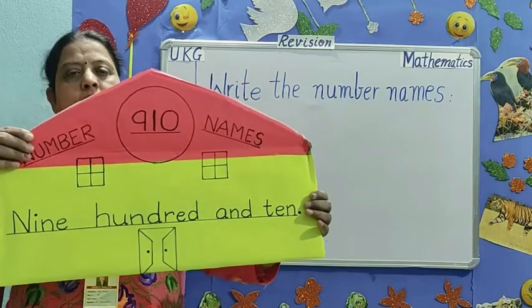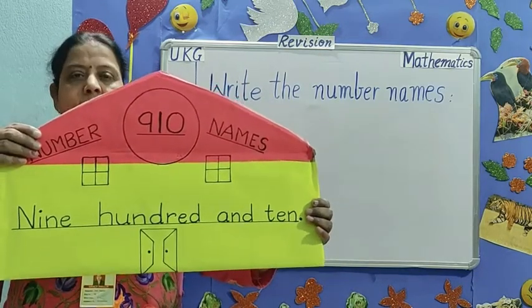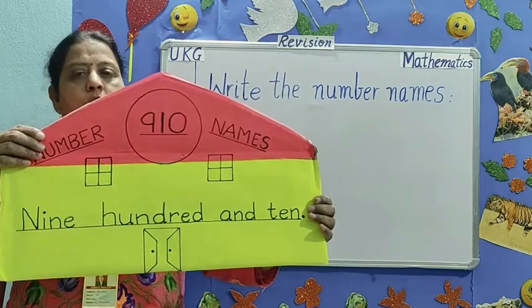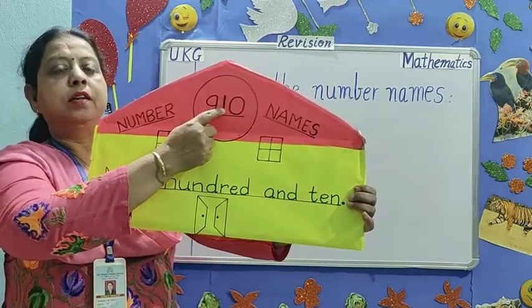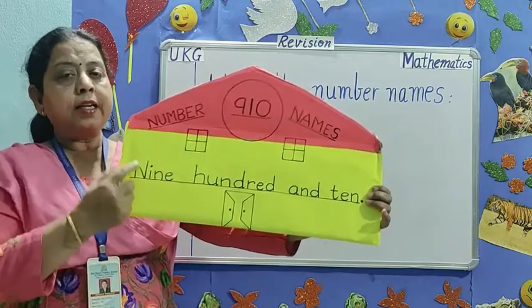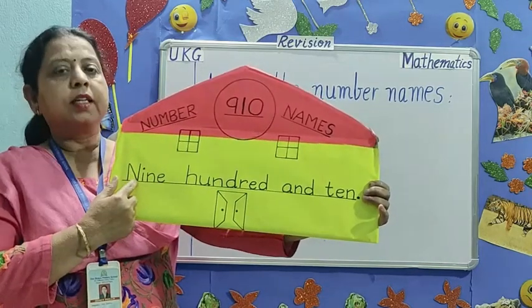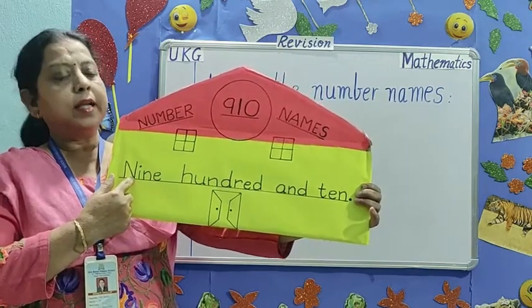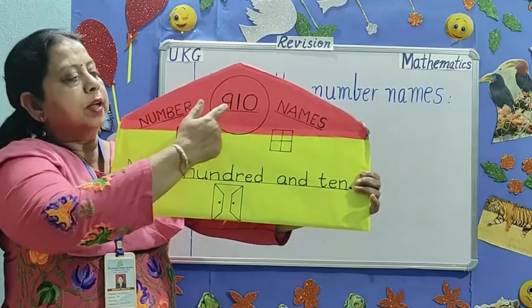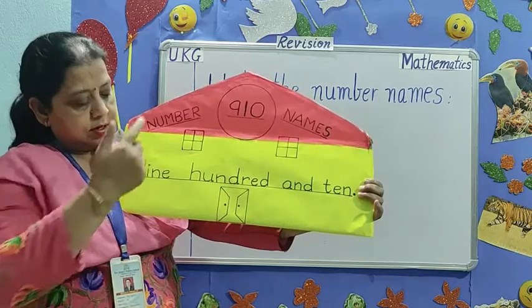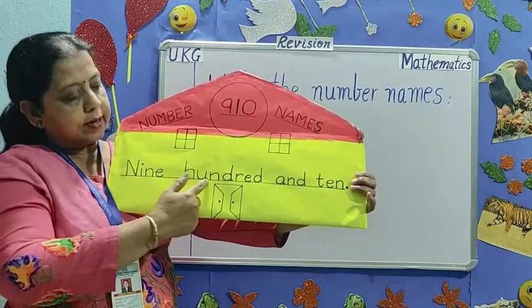What is this children? Yes, this is a beautiful house. And this is the number. When we write the number in words, that is called number names. 910.